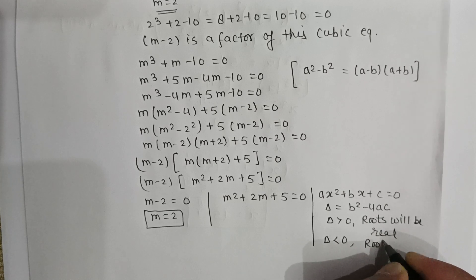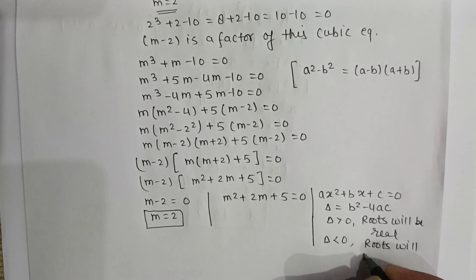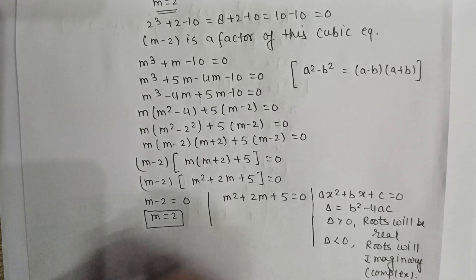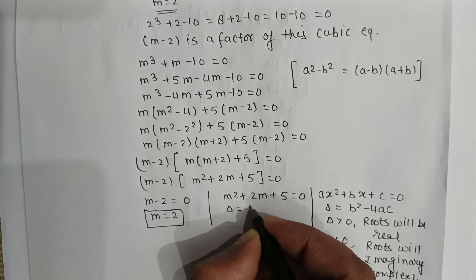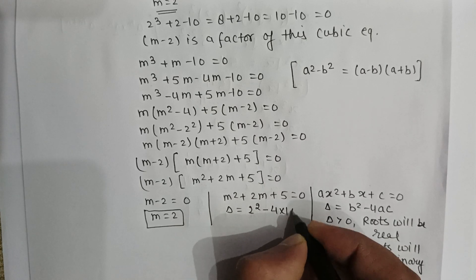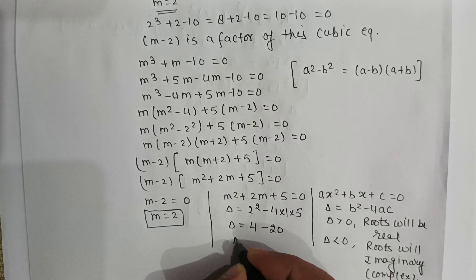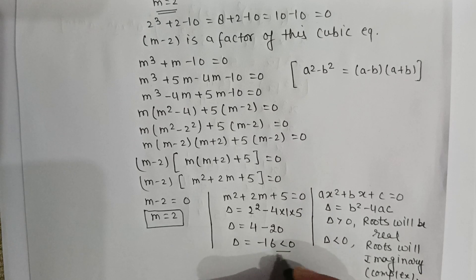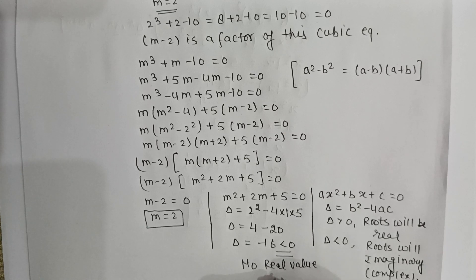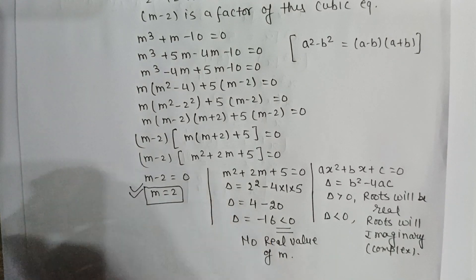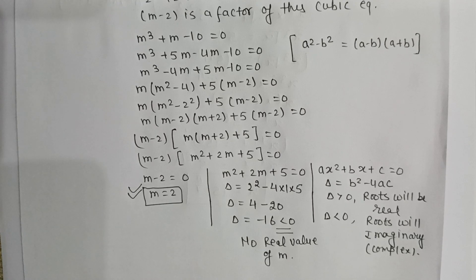If delta is less than 0, then roots will be imaginary, or complex. Here delta equals b squared minus 4ac, so delta equals 4 minus 20, giving delta equal to minus 16, which is less than 0. So there is no real value of m from the quadratic factor. Hence the only real value of m is m equals 2. This is our answer.